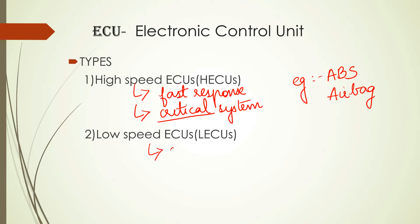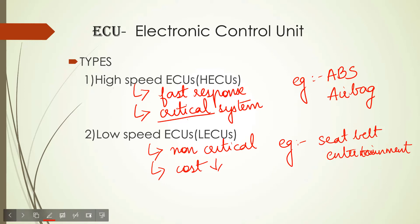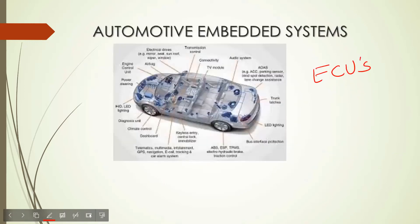Then you have your low-speed ECUs, used in non-critical applications. Naturally the cost of these will be less because the speed is less. Low-speed ECUs are used in seat control, seat belt control, entertainment, window control, wiper control, and many such things where the application is not critical and the response does not need to be very fast. Generally, your car will have around 20 to 40 ECUs.